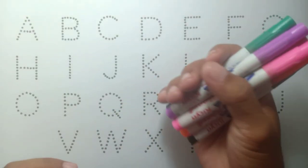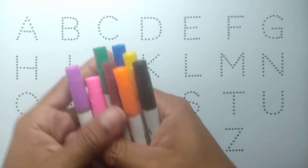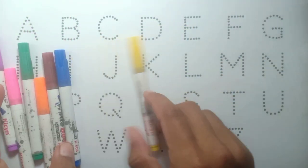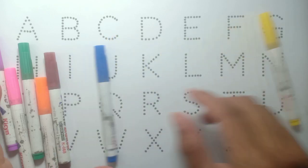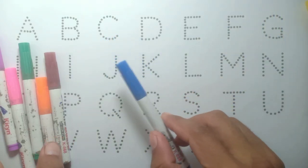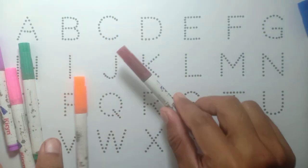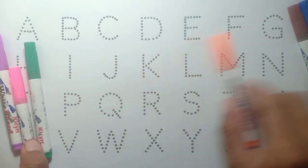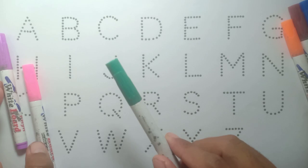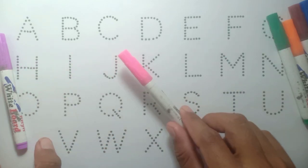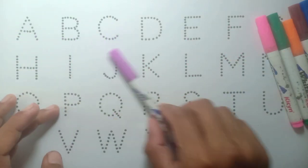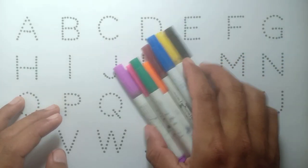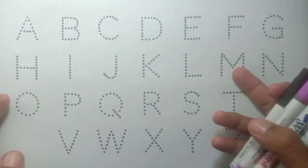Hello kids, how are you today? Let's learn some colors: black, yellow, blue, brown, orange, green, pink, and purple. Okay, let's learn alphabets.